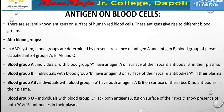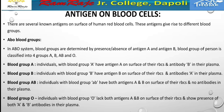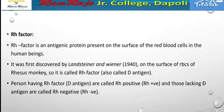Next is the Rh factor. Combined with the ABO system, blood groups can be A positive, B positive, AB positive, or A negative, and so on. The ABO system can be further modified by the Rh factor system.